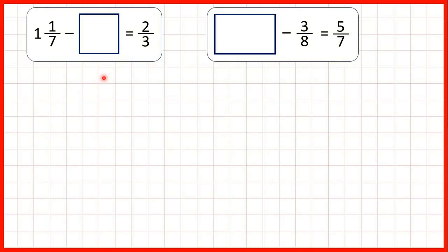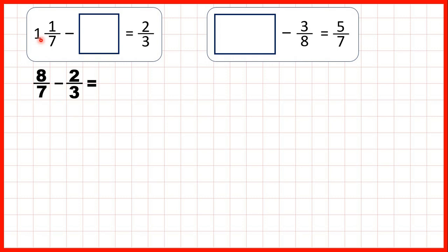Here we have some missing fraction problems, and we solve these in the same way that we solve missing number problems for whole numbers. First we have 1 and 1/7 minus something equals 2/3. It's the subtrahend that's missing, and that means we still need to use subtraction to find our missing number. We need to work out 1 and 1/7 minus 2/3.